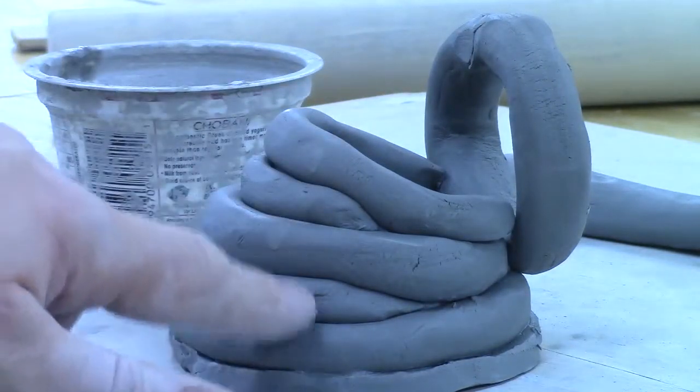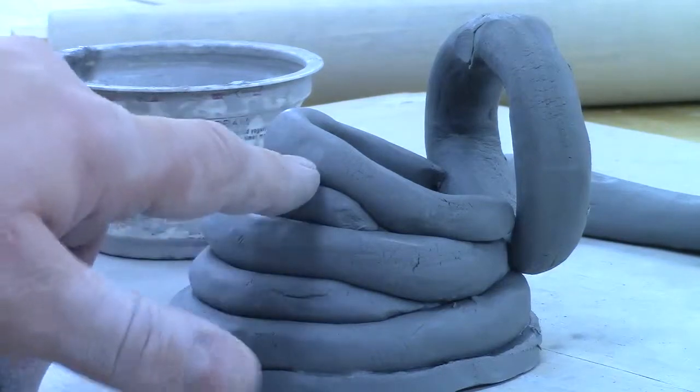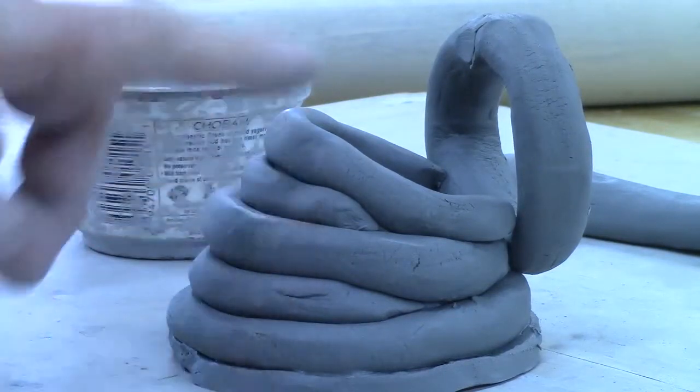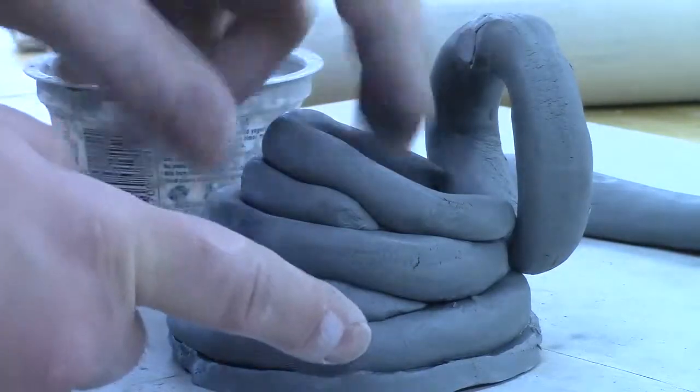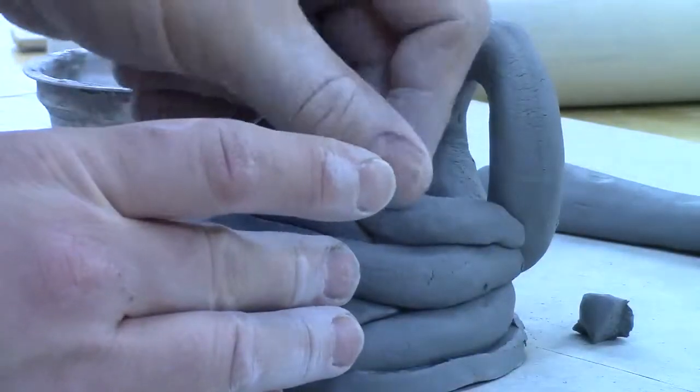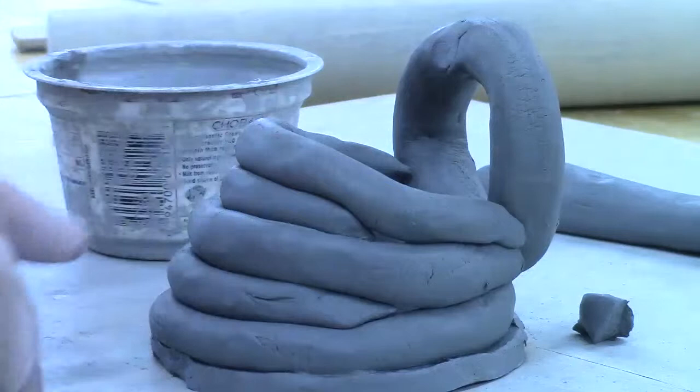And I'll make sure that we're slipping and squaring in between each of these coils. And also, after you get about three or four coils, then you're going to want to smooth out.